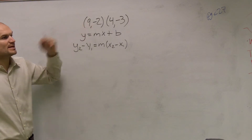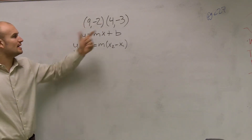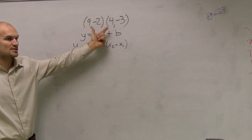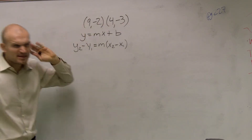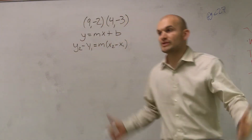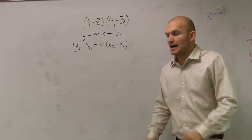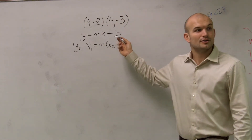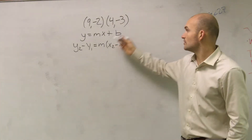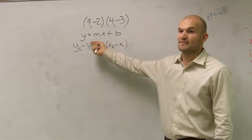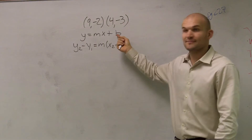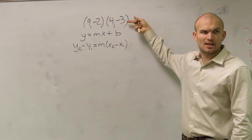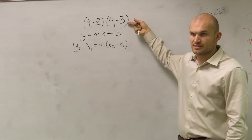Now, the problem is, if I want to find the equation of a line and I'm given two points, and I want to use this formula, I need to think: is it good to use this formula? What do we have to know? We have to know what the slope is, and we have to know what the y-intercept is. Does two points tell us what the slope is, or what the y-intercept is?